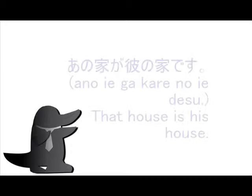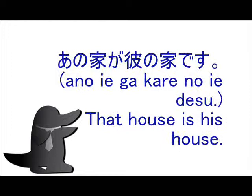Example sentence using this Kanji: 'Ano Ie ga Kare no Ie desu.' This means: 'That house is his house.'